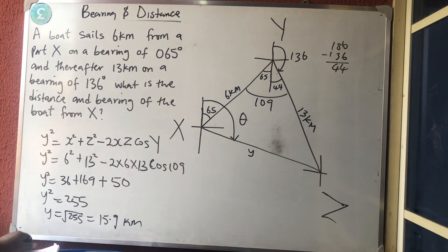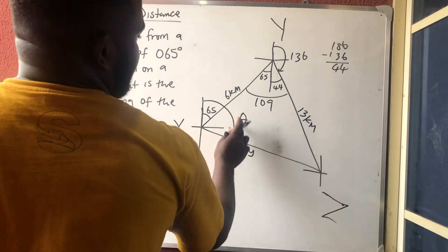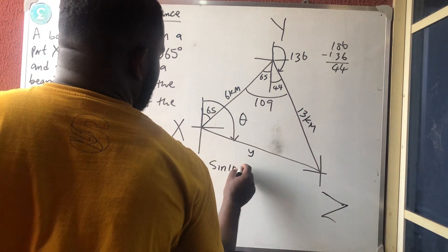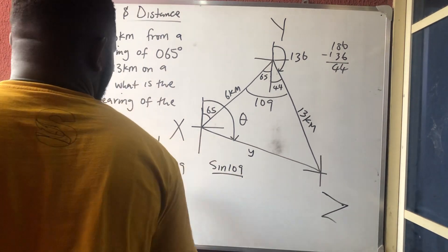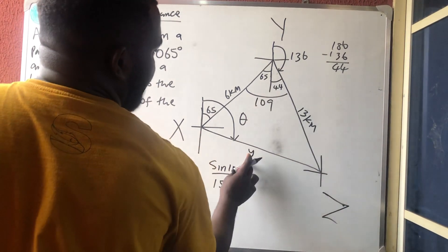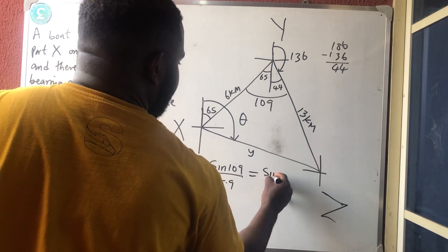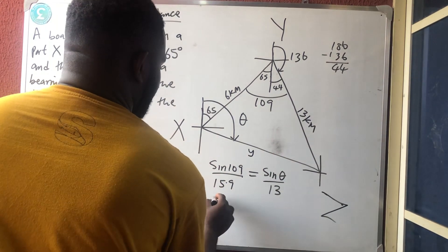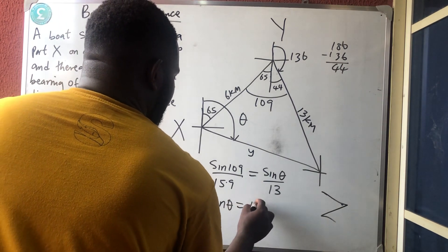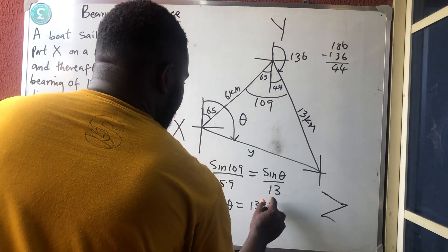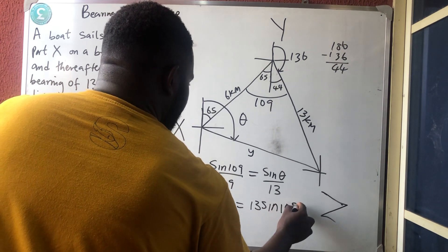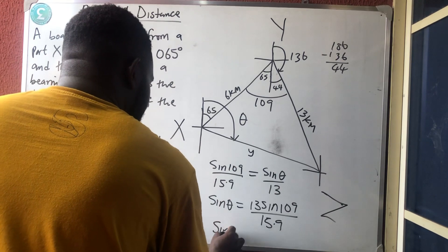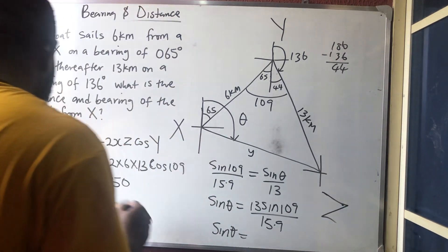So to get the angle, this angle now, I can use sine rule. I can say sin 109° over the one I have, which is 15.9. Sin this over this is equal to sin θ over the one that is facing, which is 13. So therefore, sin θ = 13 sin 109° divided by 15.9.